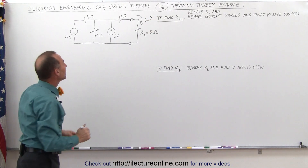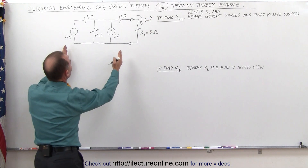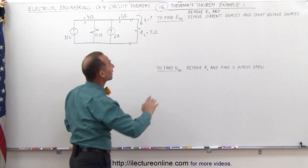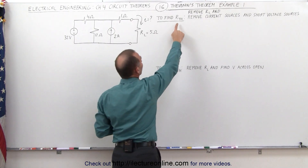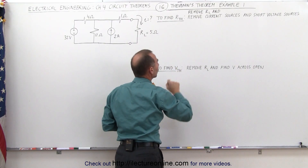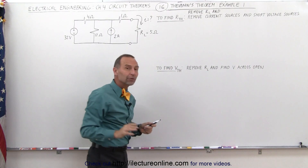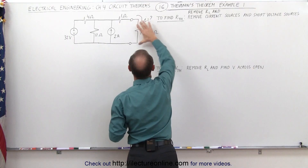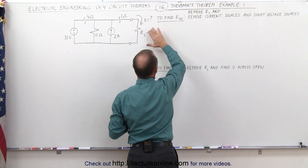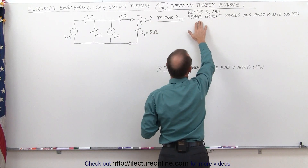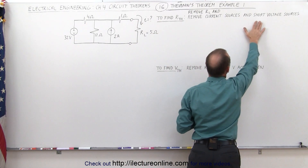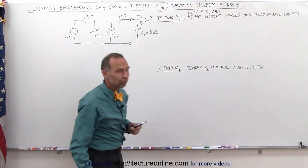To do that, we need to turn the linear circuit into a Thevenin circuit. And to do that, we need to find the Thevenin resistance and the Thevenin voltage. To find the Thevenin resistance, we're first going to remove the load resistor, and then what's remaining, we're going to remove the current source and short out the voltage sources.